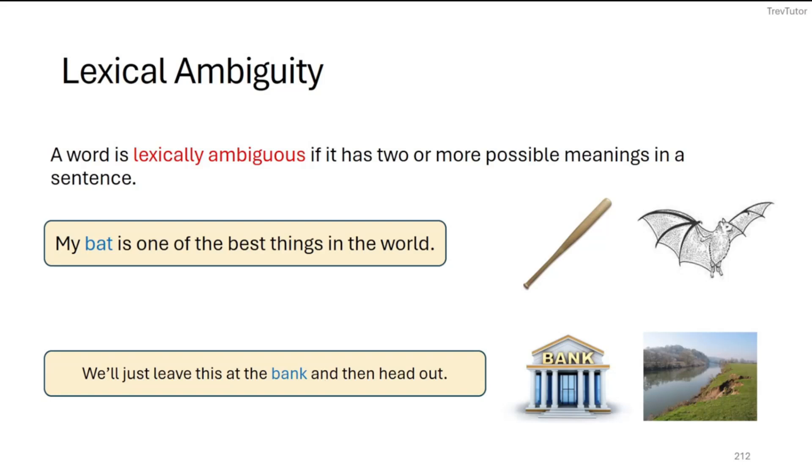So now that we understand what homonyms are and things like that, we can talk about ambiguity and the different types. So there's three types of ambiguity.